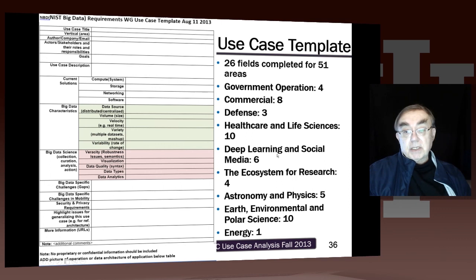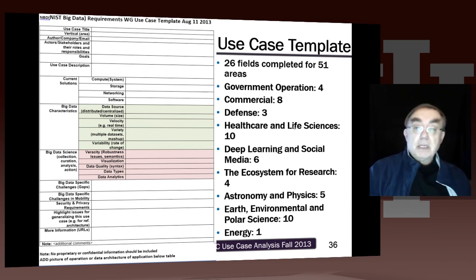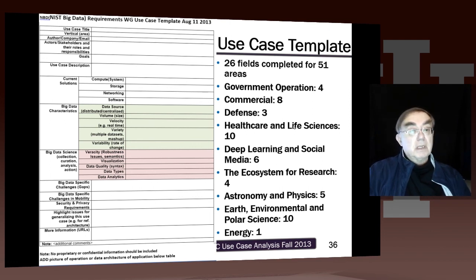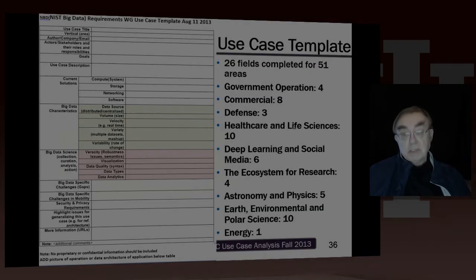These numbers should not be taken seriously as indicators of the importance of big data in certain areas — they just represent who filled in our form. This was all done over roughly six weeks, because we didn't have the form until the middle of July. We started winding down at the end of August to summarize everything, so this represents six weeks of intense activity to gather these use cases.